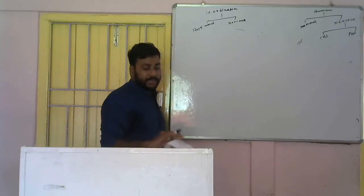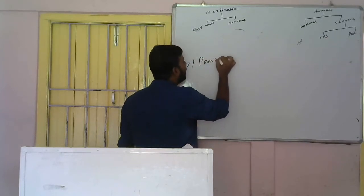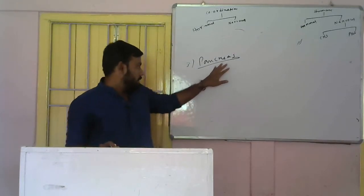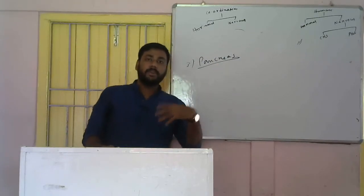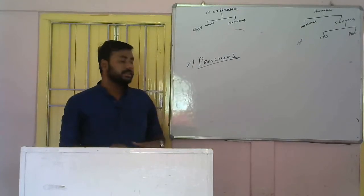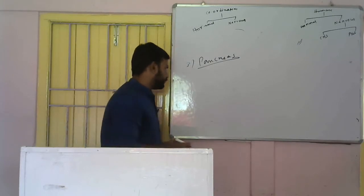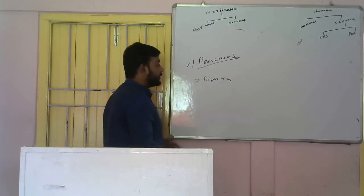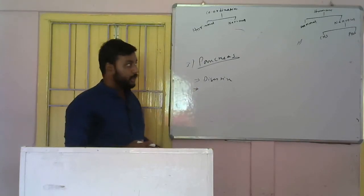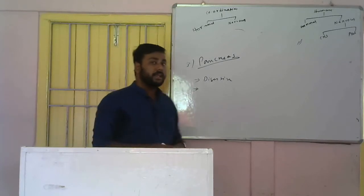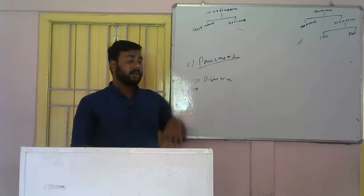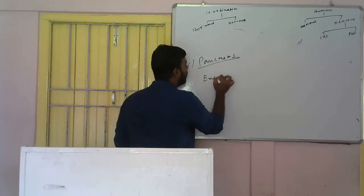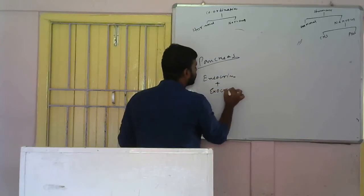The third gland is the pancreas. You learned about pancreas previously in the digestive system in the Life Process chapter. The pancreas is the only gland in our body that functions as both an endocrine gland and an exocrine gland, hence it is known as a mixed gland. We saw the functioning of pancreas as an exocrine gland in Life Process. Now we will learn about the endocrine function of the pancreas.